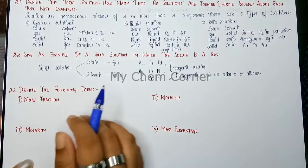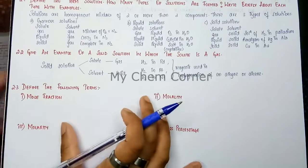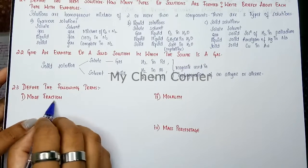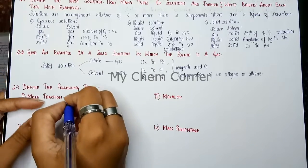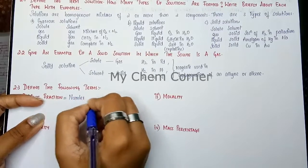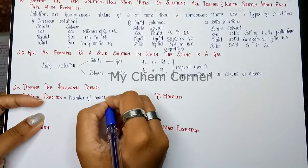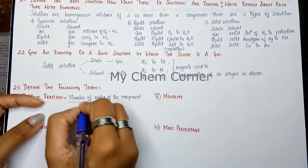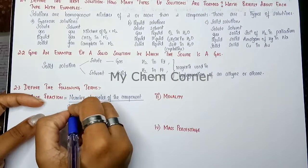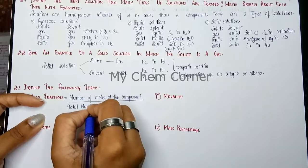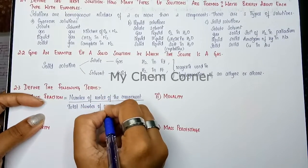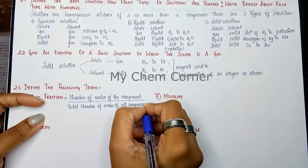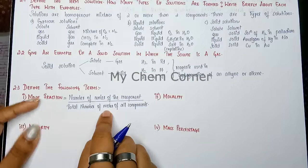When you break it down to number of moles, how are you going to write the definition or formula? When you're talking about mole fraction, you're talking with respect to number of moles. So mole fraction is defined as the number of moles of the component (or number of moles of solute) divided by the total number of moles of all components.